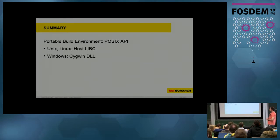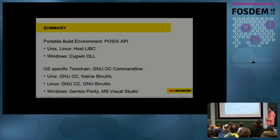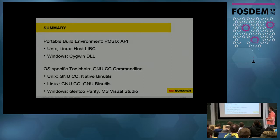For a summary: the portable build environment using the POSIX API on Unix and Linux is easy using the host libc, and on Windows using Cygwin.dll. For the OS-specific toolchain providing a GNU command line, on Unix and Linux it's GCC using native or GNU binutils, and on Windows there is Gentoo Parity wrapping the Visual Studio compiler to provide the GCC command line.